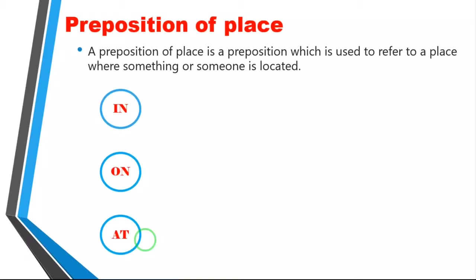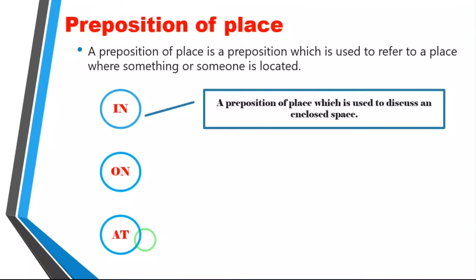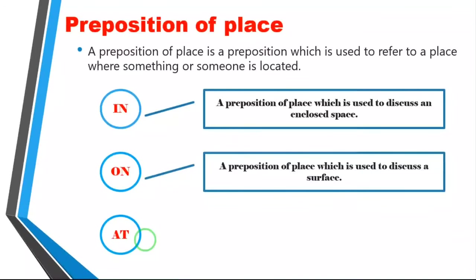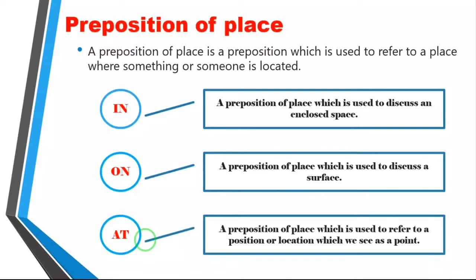So what is 'in,' or how are we going to use 'in'? 'In' is a preposition of place used to discuss an enclosed space. When you say enclosed, it means inside — inside a box, inside a bottle, something like that. Do you understand? Yes, I guess. Next: 'on' is a preposition of place used to discuss a surface — like a floor, flat surface, table. And 'at' is a preposition of place used to refer to a position or location seen as a point.